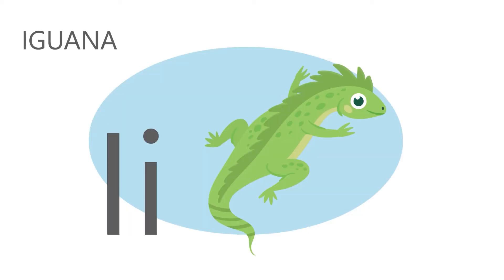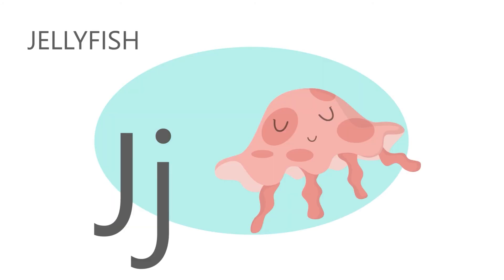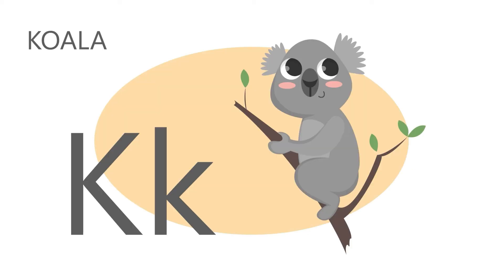I is for iguana. I, i, iguana. J is for jellyfish. J, j, jellyfish. K is for koala. K, k, koala.